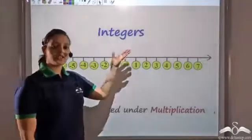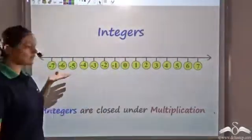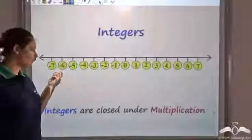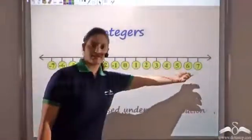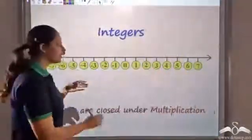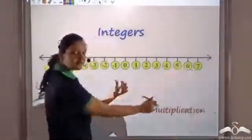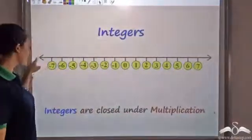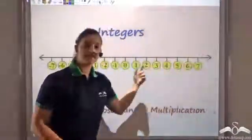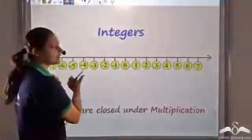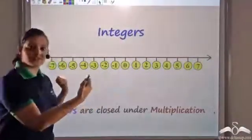We had seen that integers could be represented on a number line by points which are called as numbers. Now there are infinite positive numbers and infinite negative numbers. So I have these two arrows at both ends indicating that they go on forever in both directions.